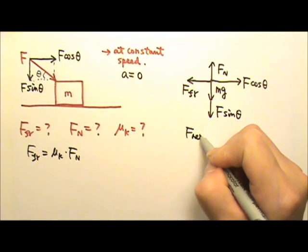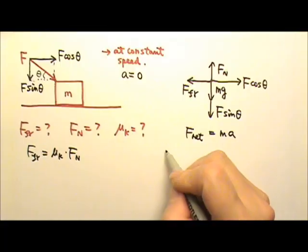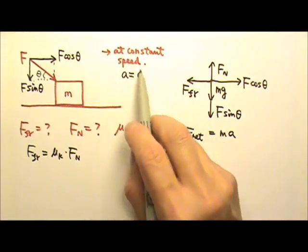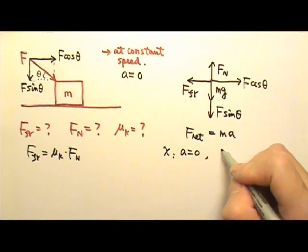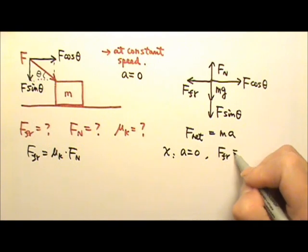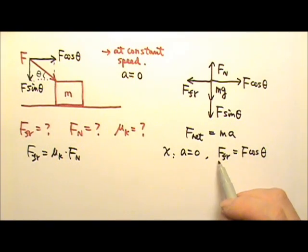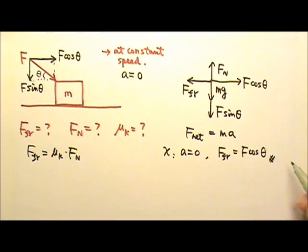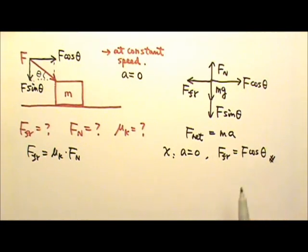Now let's write the force equation. In a two-dimensional case, we separate the x and the y. In the x direction, the acceleration is 0, so the forces to the left and right must be equal and cancel completely. So friction equals F cosine theta. This is our answer because F and theta are given — we're answering in terms of what's given.